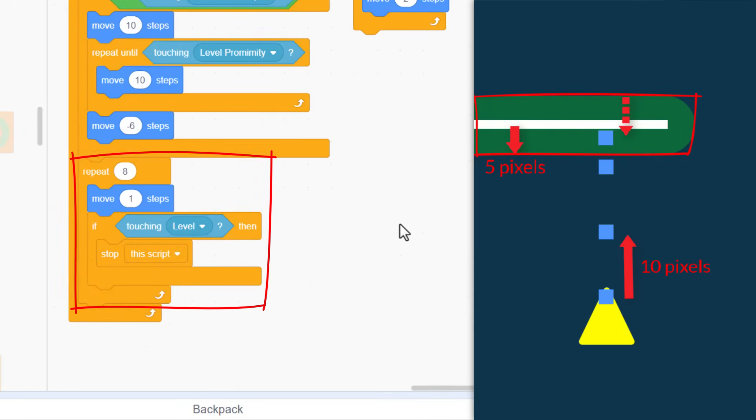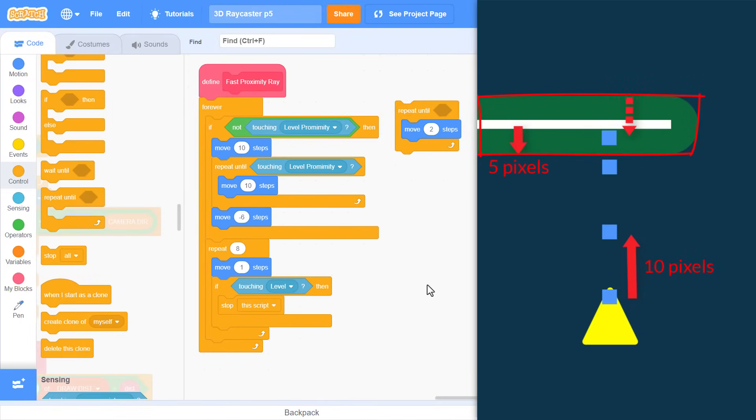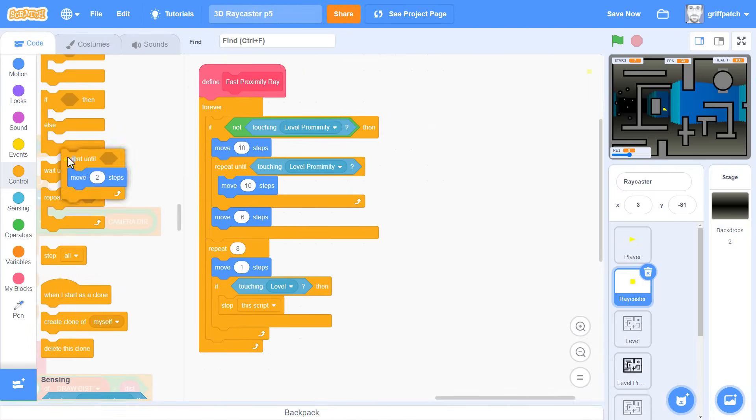Now, if after 8 tries we are still not touching the level, we can assume we were just passing by a wall, and we'd loop around and start fast skipping across the level again. Yeah, I really, really like that. I am stoked to give it a test. So, off we go.